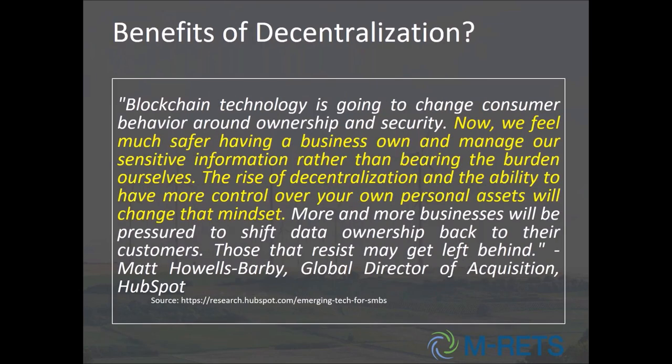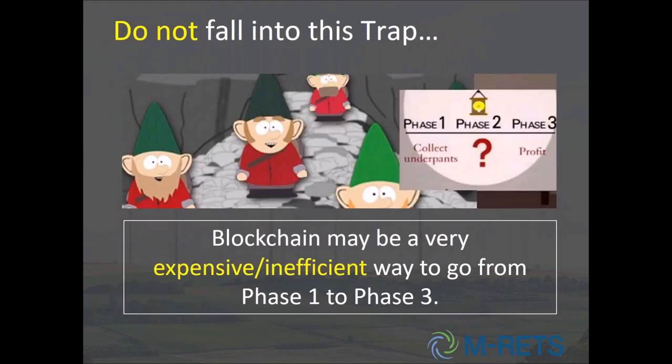One of the big pieces we hear about is the benefits of decentralization. This was important to GDPR — the rise of decentralization and the ability to control more of your own data as an asset is important. But that can also be done through comprehensive APIs that allow you to access your data in the way you want — it doesn't necessarily require a distributed ledger. It's a bit like the underwear gnomes from South Park: blockchain might be a very expensive, inefficient way to go from phase one to phase three. There's a jump to blockchain as a way to solve problems that can already be addressed through other means.